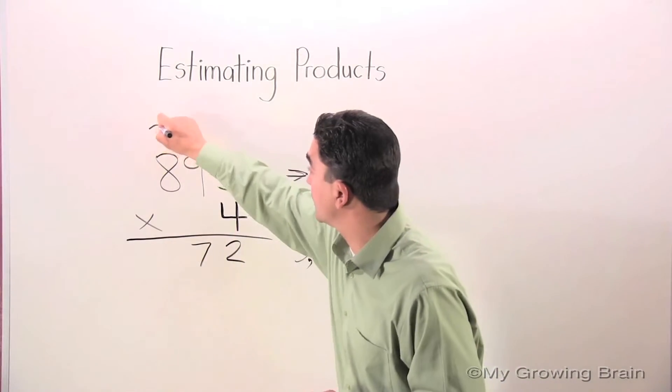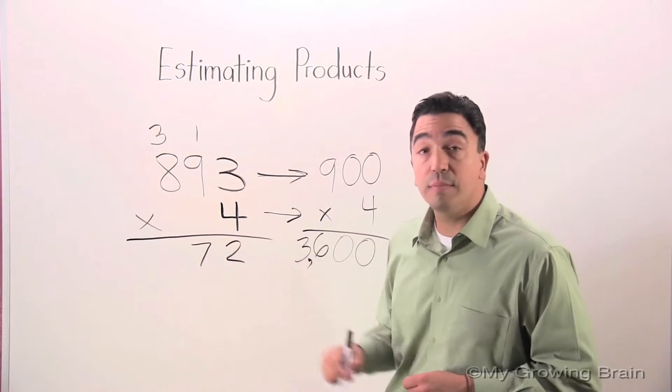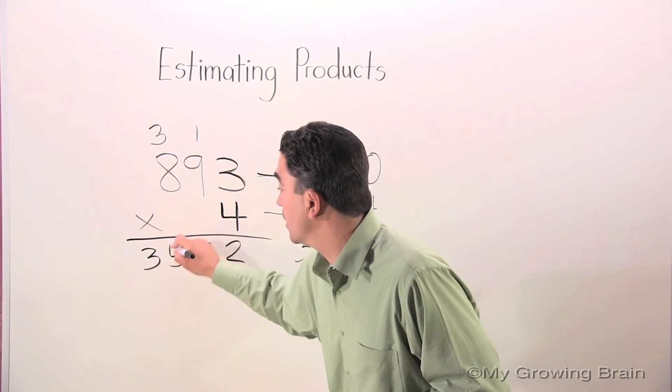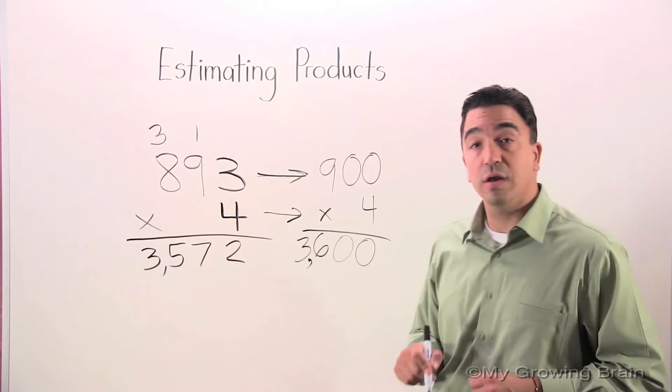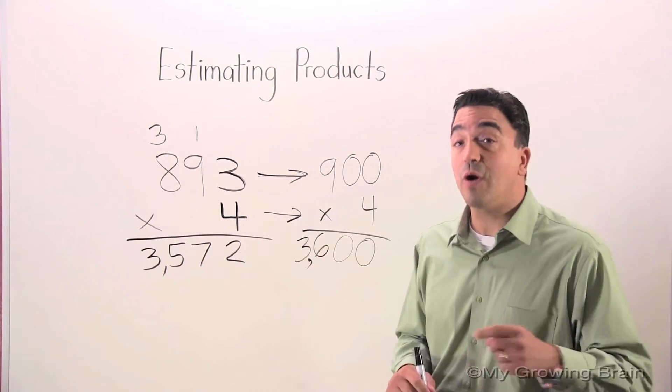Carry the 3. 4 times 8? 32. Plus 3? 35. Place our comma in there. 3572 is our actual answer.